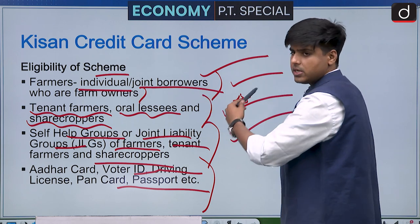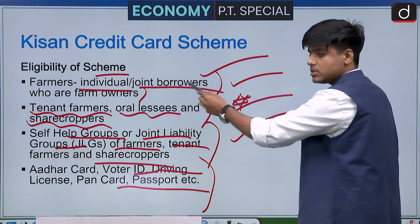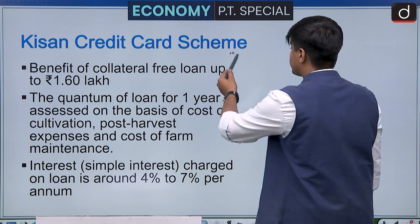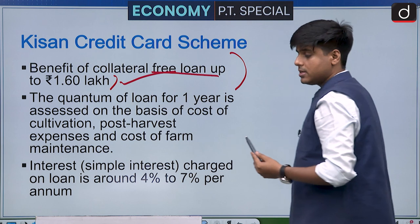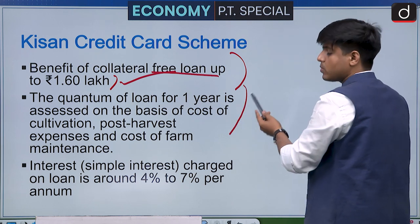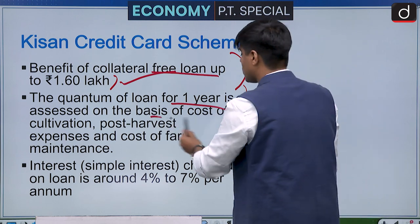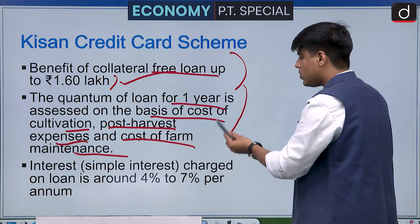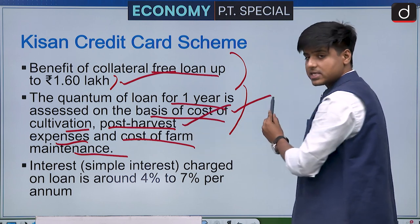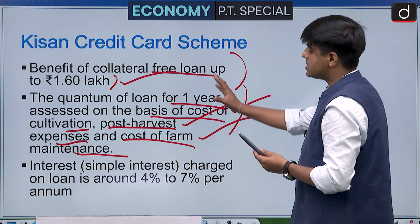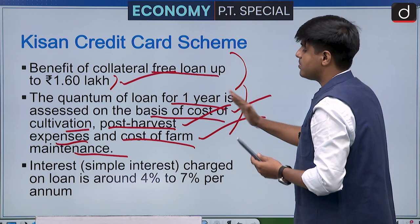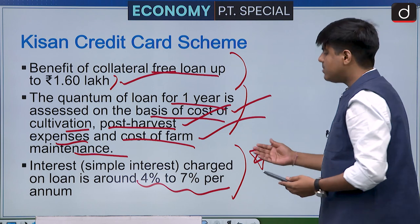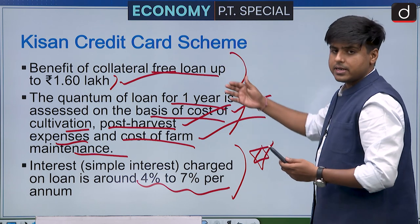The KCC scheme provides collateral-free loans up to Rs. 1.60 lakh. The loan quantum is for one year and is determined based on cost of cultivation, post-harvest expenses, and cost of farm maintenance. Interest is simple interest charged at 4 to 7 percent per annum, which is significantly lower than other credit card interest rates.